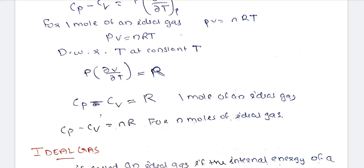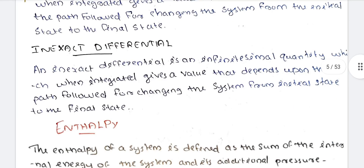For n moles of an ideal gas, Cp minus Cv equals nR. This completes the derivation.